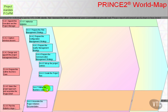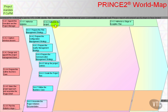Then refine the business case by using the costs and timescales from the Project Plan, and then assemble the Project Initiation Documentation. Combine that with the end stage report and the next stage plan from the stage boundary activity that will occur at the end of this stage, and ask the question: can we authorise the project and can we authorise a stage or exception plan?